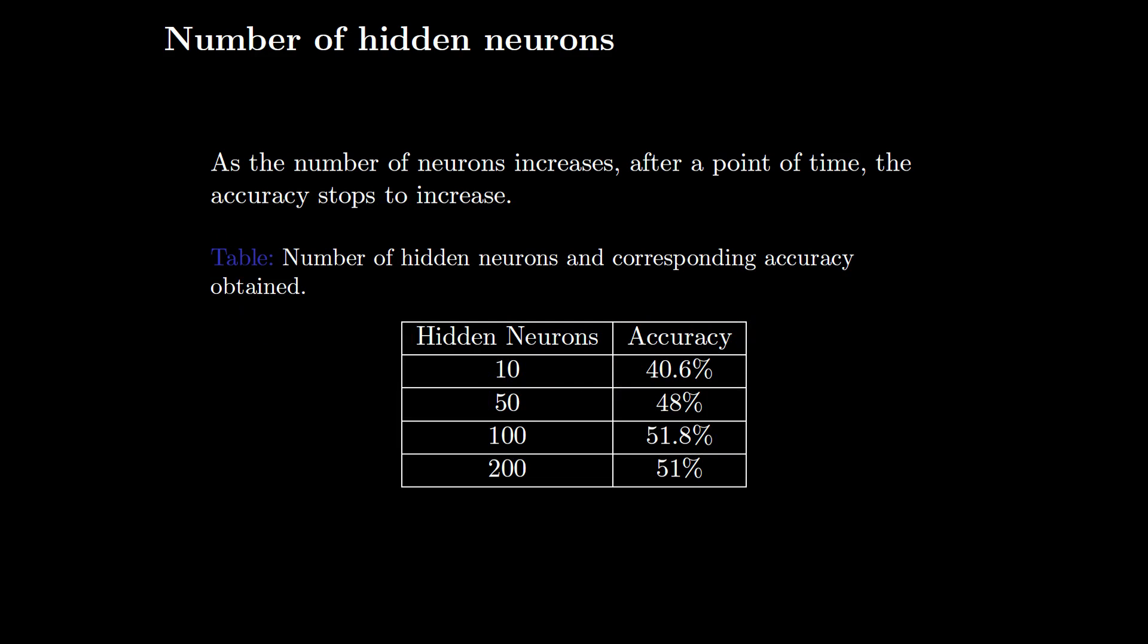In testing, we identify the performance or accuracy of the network in doing the task of image classification. Let us see the role of hidden neurons on the accuracy. We see that in the case of using 10 neurons, the accuracy obtained is 40.6 percent; using 50 neurons, we have 48 percent; and as we increase it to 100 neurons, it goes to 51.8 percent. By increasing the hidden neurons beyond that, we do not see any significant increase in the accuracy. This is because of overfitting of the data during training.